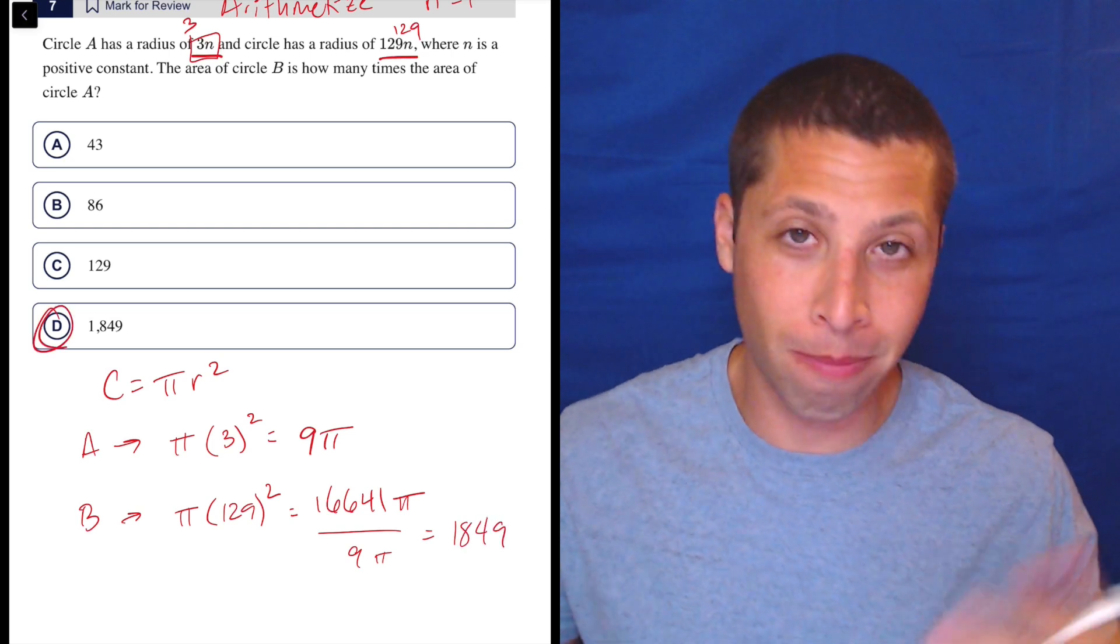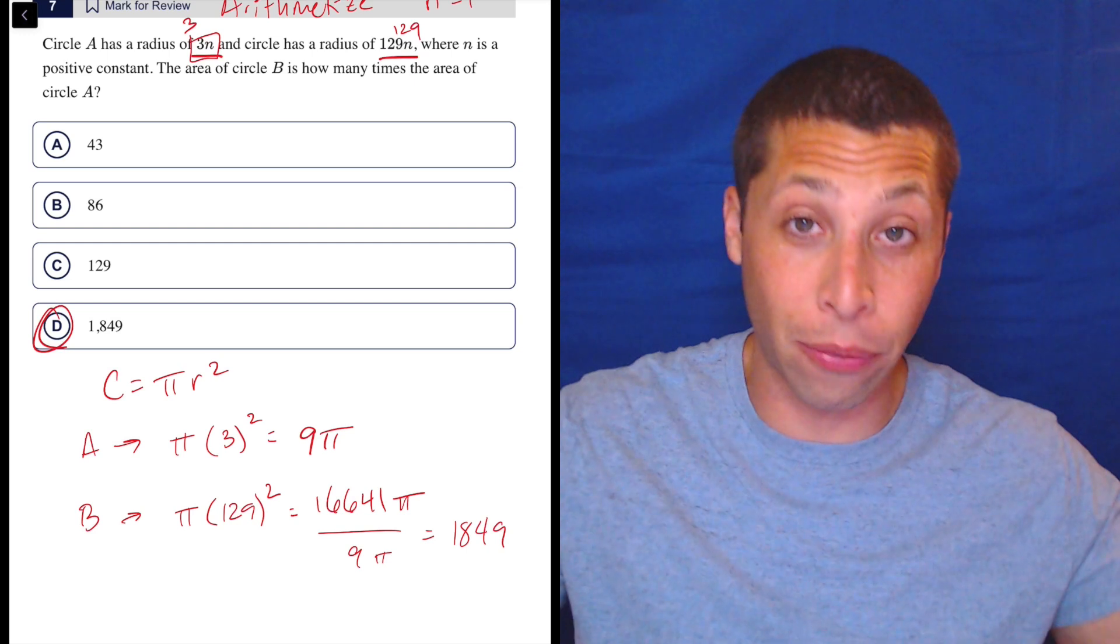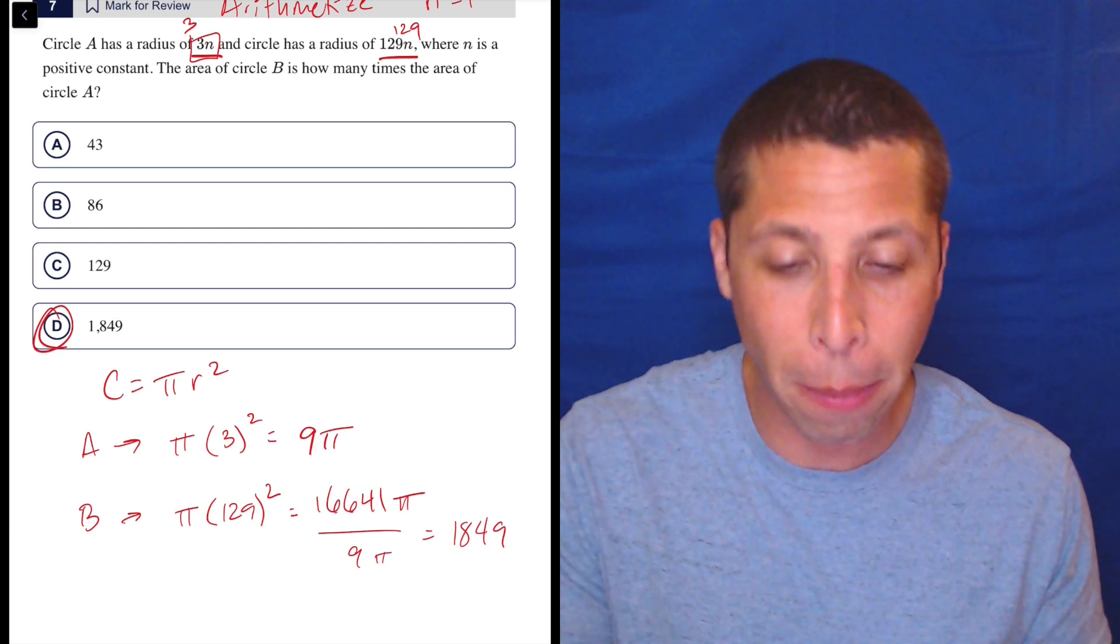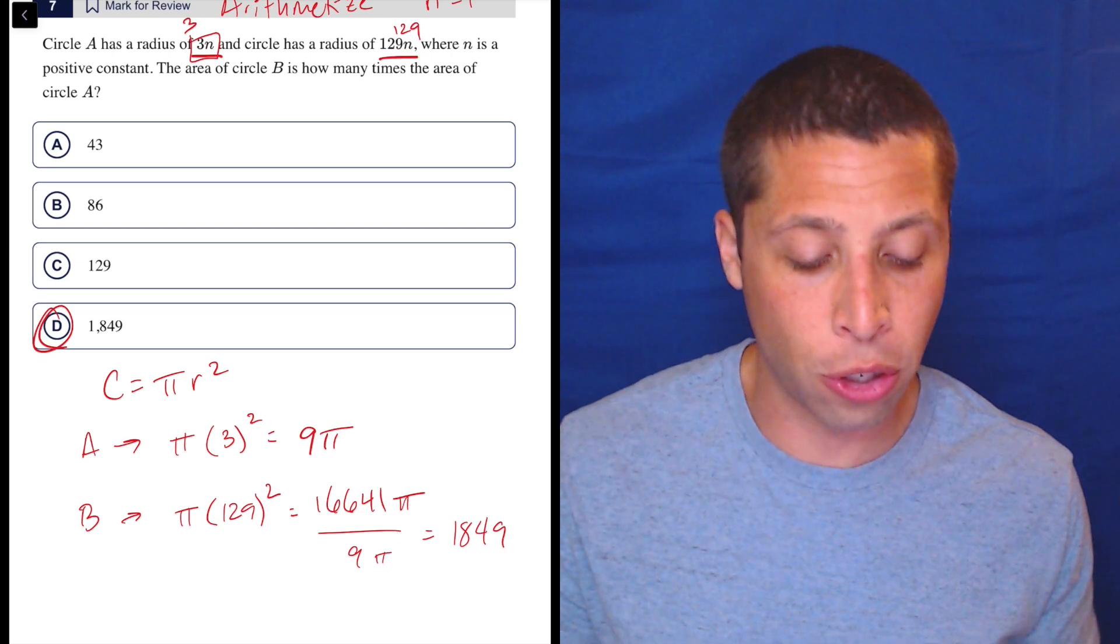And I probably could have just guessed that based on the big difference in the numbers. 16641 is a huge difference from 9. So you probably could have figured that out, but it doesn't hurt to just do it.